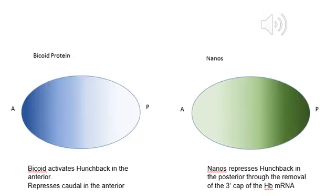The anterior-posterior axis of Drosophila is laid down through the establishment of various protein morphogens. Maternal mRNA is deposited in the egg before fertilization and is localized to a specific region. On the left, Bicoid mRNA is localized in the anterior and diffuses posteriorly. This results in a protein gradient that activates hunchback in the anterior and represses caudal in the posterior.